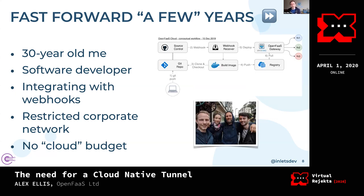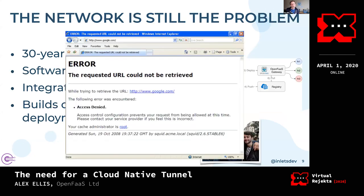What we wanted was a pipeline where, number one, we'd kick off code from a git commit, the code would be built and deployed into our cluster as an OpenFaaS function — and that was basically it. We didn't want a lot, but we just didn't have any way around it. The network turned out to still be the problem, even back then.